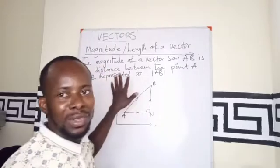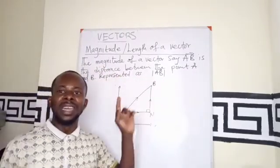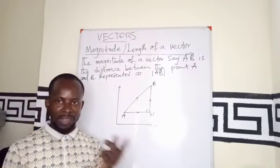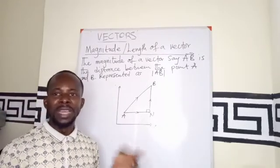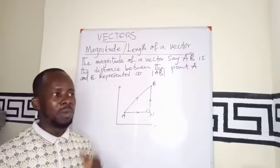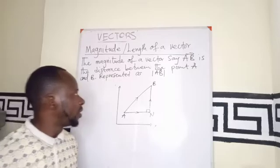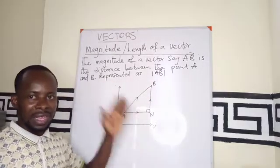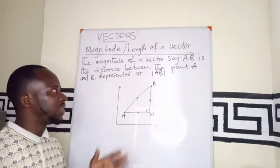Now we are saying that the magnitude of a vector is just the distance between the two points. So for example, magnitude of vector AB will be the distance between the vector A and B. So mathematically or symbolically, we represent a magnitude as AB placed in two bars.